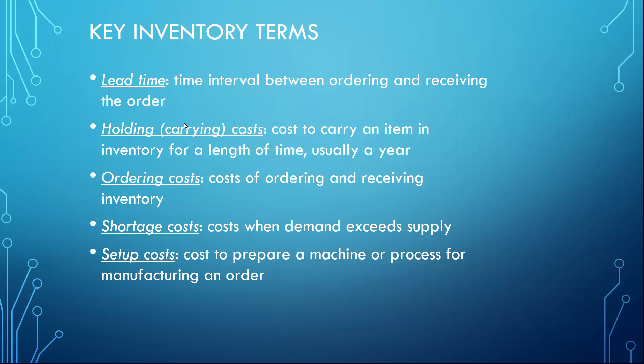Holding or carrying cost is the cost to carry an item in inventory for a length of time, usually a year — whatever you put on the shelf will cost you a certain amount of money. Ordering cost is the cost for ordering and receiving inventory, so once you place the order, you are paying money for that order.